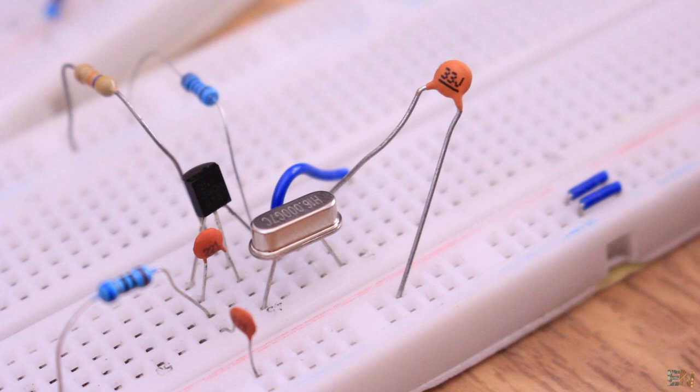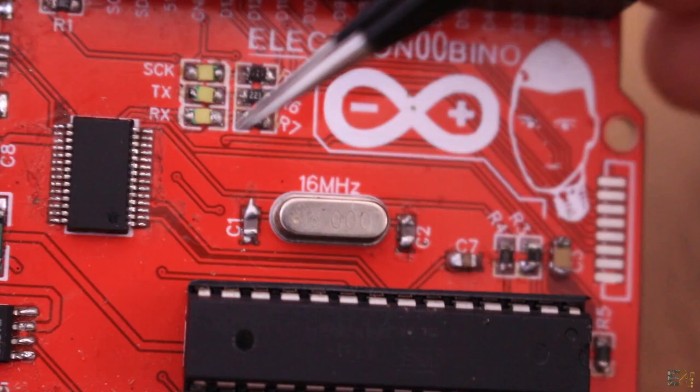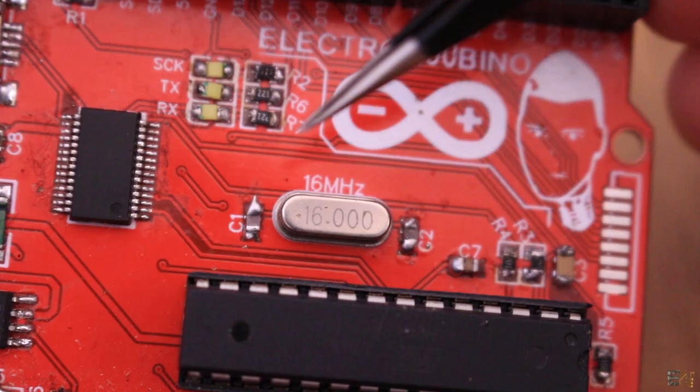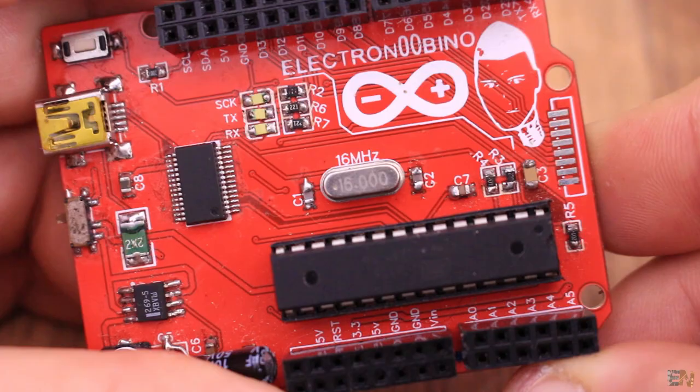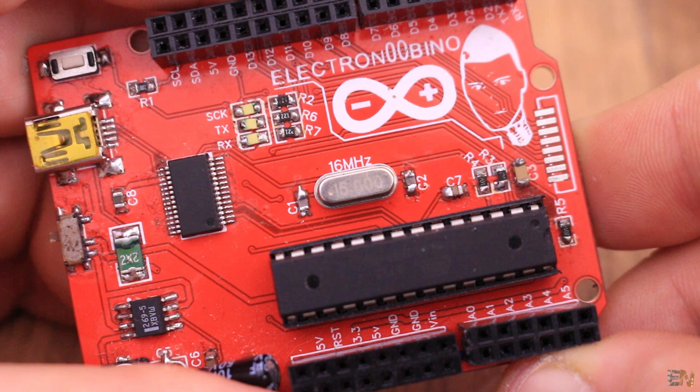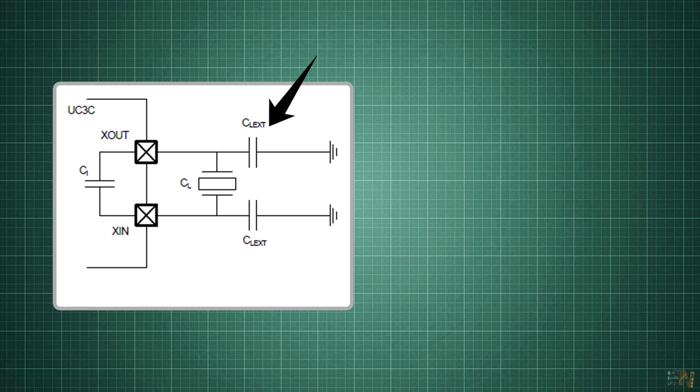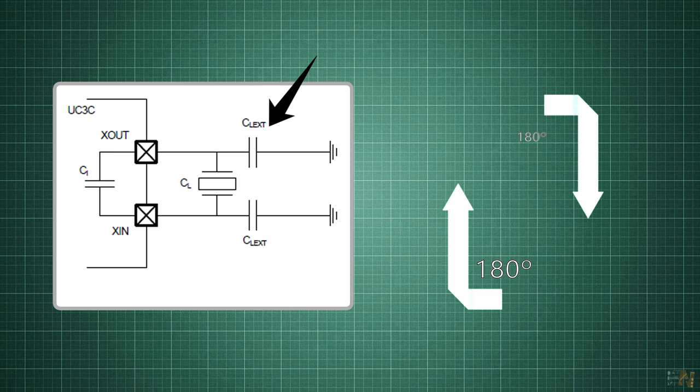Usually we have capacitors around the crystal in order to resonate with the crystal inductance and cause the crystal to oscillate on its fundamental resonant mode. The reason we have two capacitors in series is to create a network that creates a 180 degrees phase inversion at resonance because the amplifier has a 180 degree phase inversion between its input and output. This makes the loop gain to have a net phase shift of 360 degrees which is what causes to oscillate.